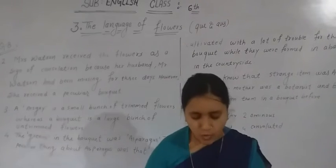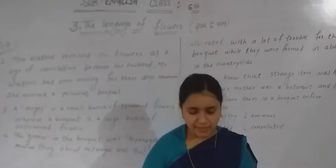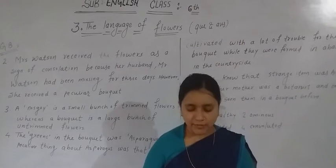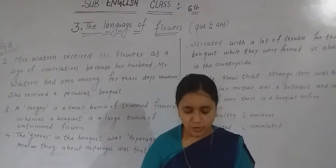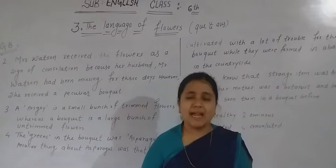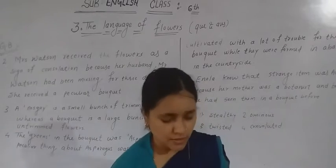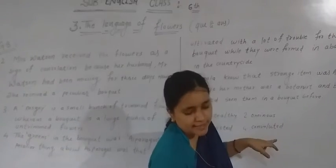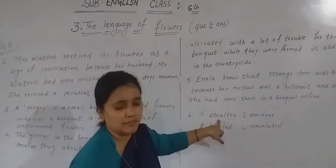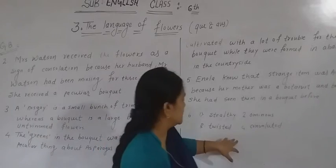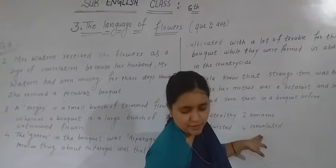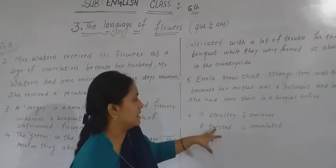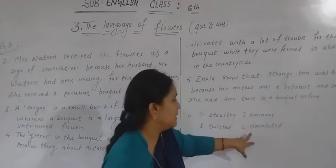Question six: identify four words in the last two paragraphs that are unpleasant and frightening and seem to indicate ill intent. The four words are: first, stealthy — meaning sneaky or secretive; second, ominous — meaning bad or threatening; third, twisting; and fourth, convoluted — meaning difficult to understand. These are the four unpleasant words used in the last paragraphs.